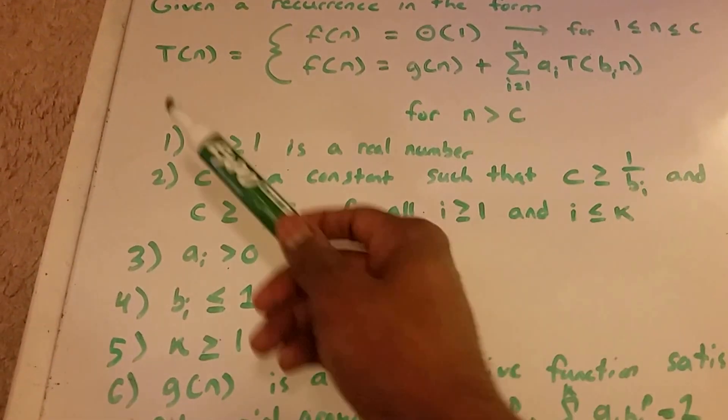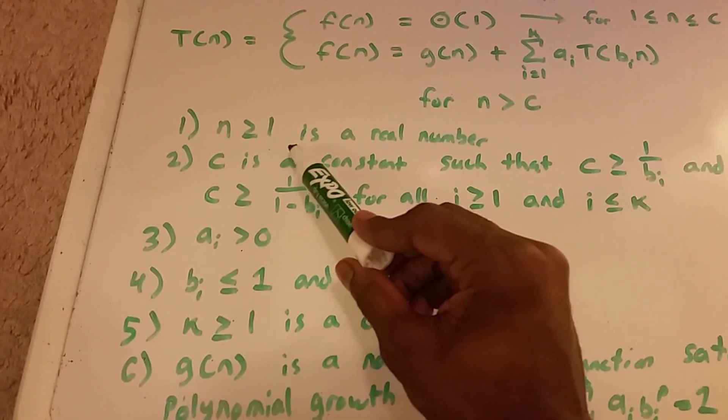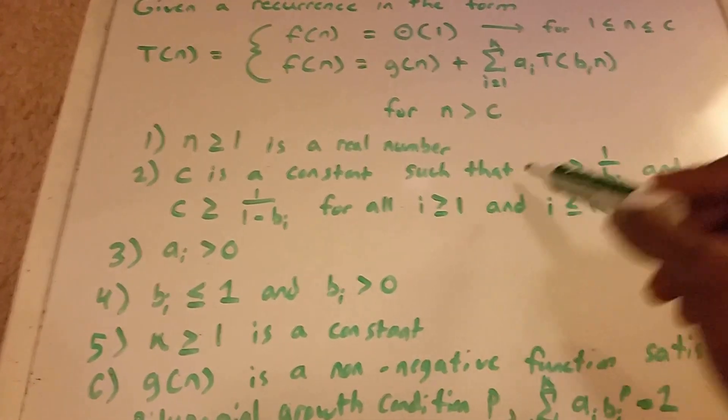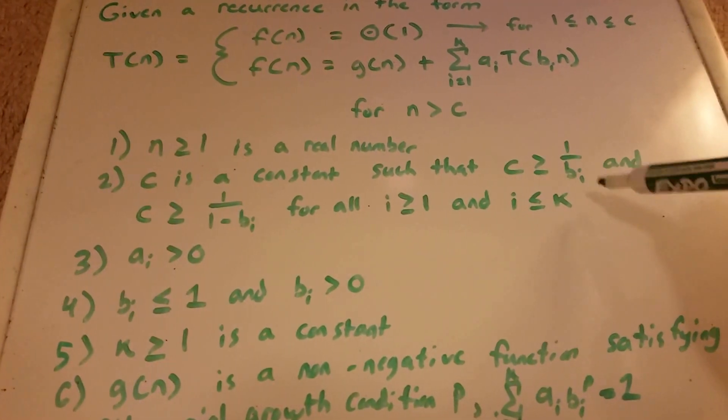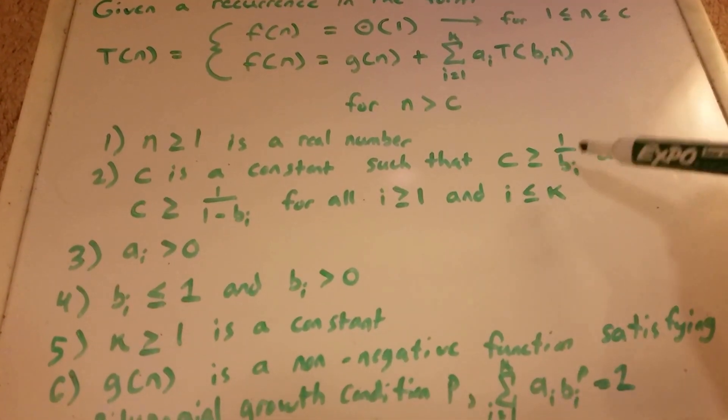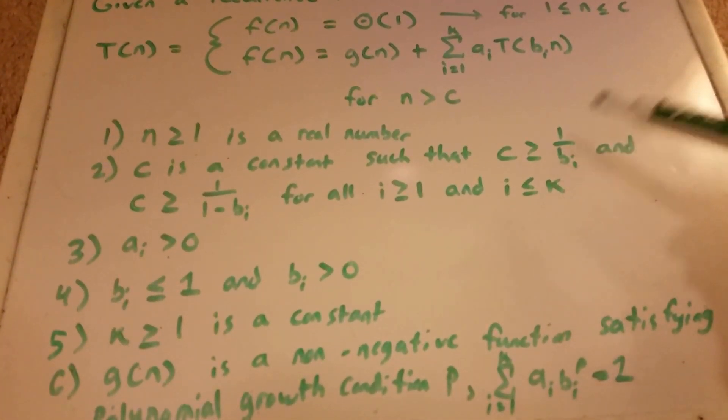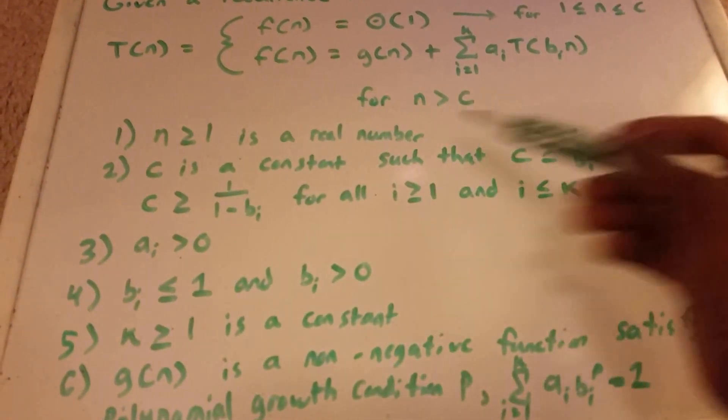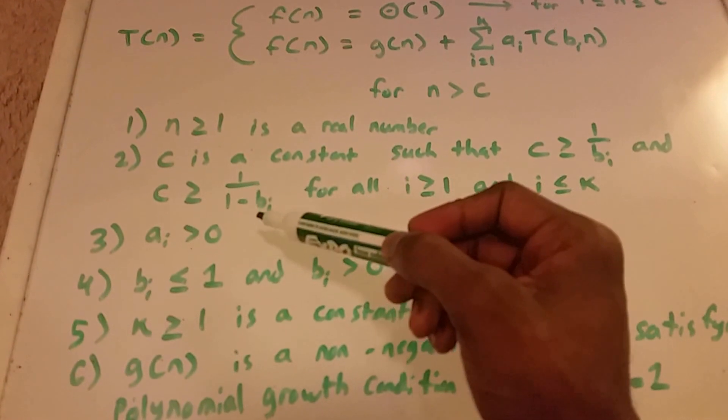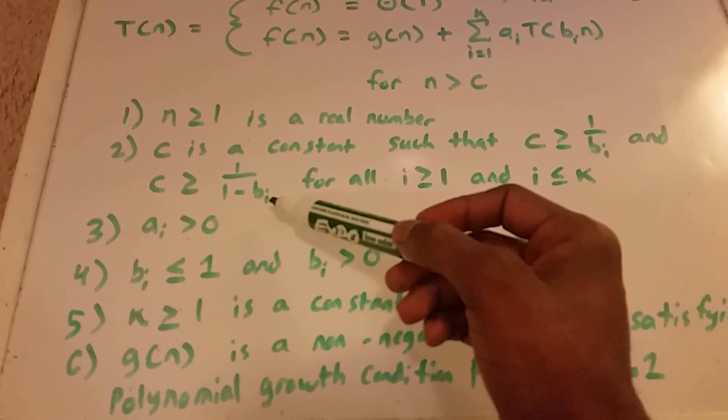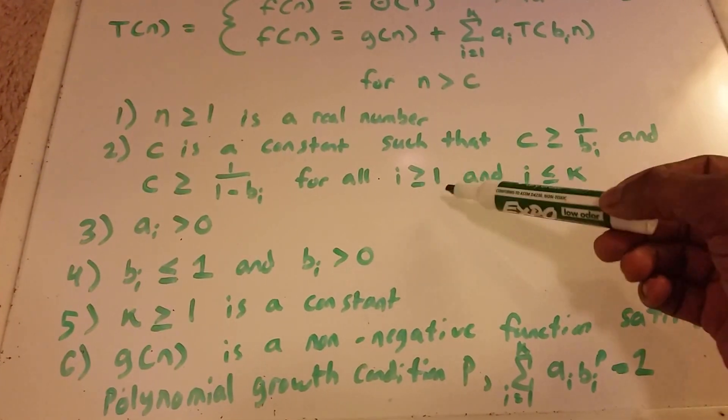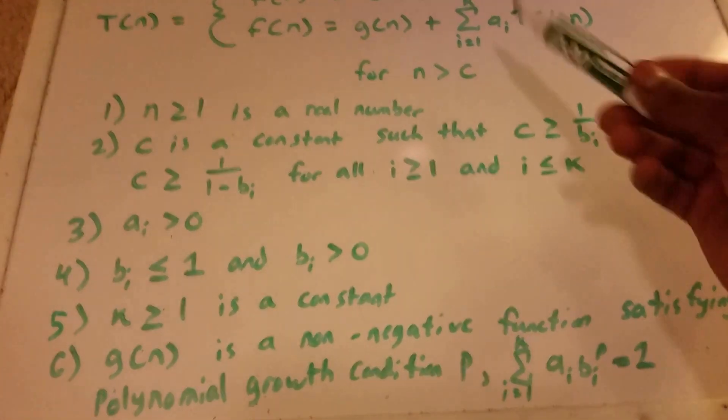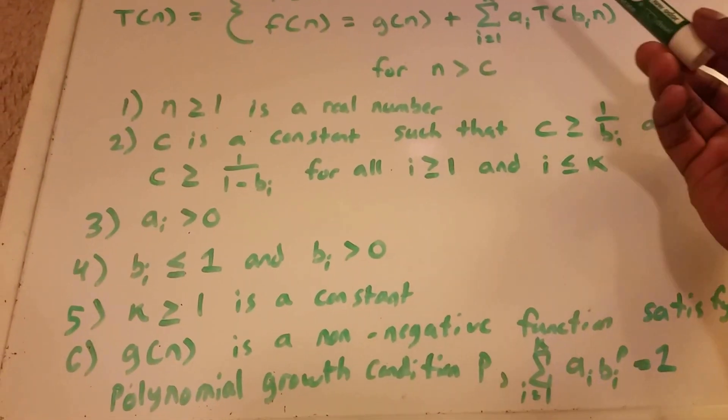And then it has a few more conditions. n must be greater than or equal to 1, and n is a real number. C is a constant such that C is greater than or equal to 1 over b subscript i, for all of the b's in the summation. And C is greater than or equal to 1 over 1 minus b subscript i, for all i greater than or equal to 1 and i less than or equal to k.